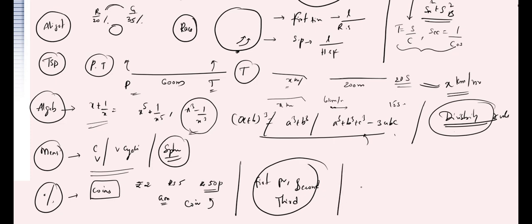Another topic is income, expenditure, and savings. For example, if income is increased by 30% and expenditure is increased by 10%, they ask by what percentage savings increase. Make sure you can solve this kind of problem.